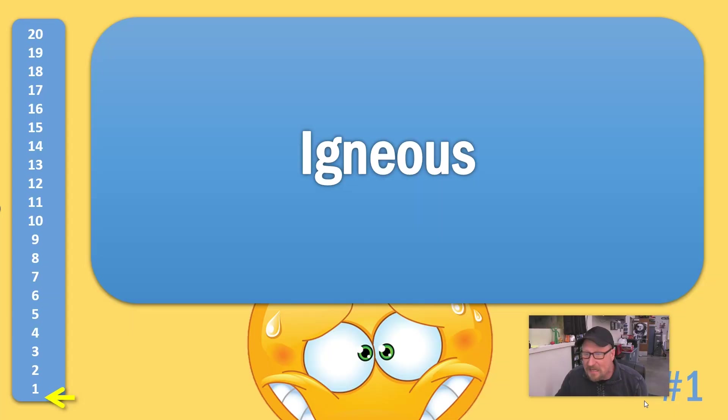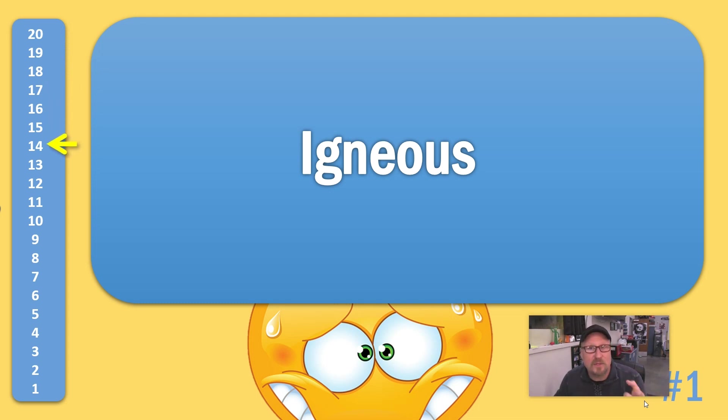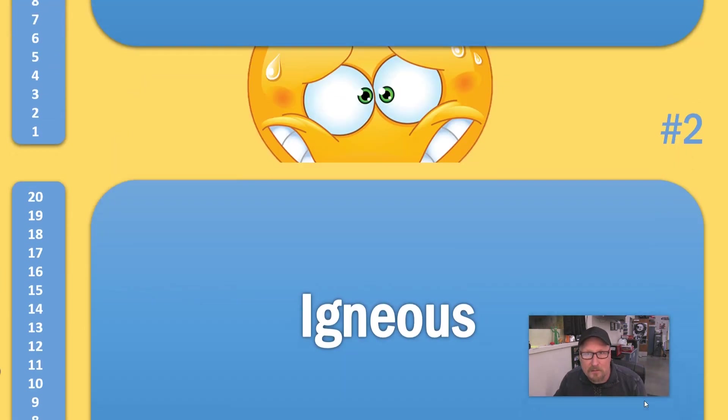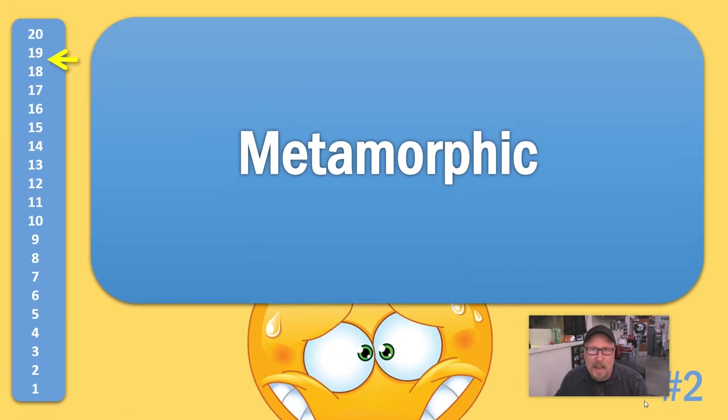If they get it — say it's 'igneous' — you just click forward. It'll drop the timer down, click again quickly, and the next one comes up. The kids give their clues and so forth. If it gets to the bottom, it doesn't automatically move, which gives the teacher the ability to fudge the numbers a little bit and give them a few more seconds if they're close.